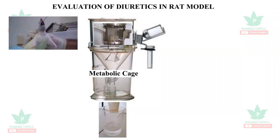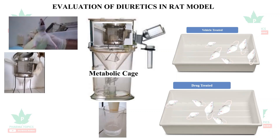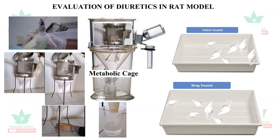We administer the test drug and then do the grouping. Normally, we have two groups: a vehicle-treated group and a drug-treated group. When the animal is given the test drug or vehicle, it is placed in the metabolic cage. You can close the lid, and then we use a collector to collect the urine volume.